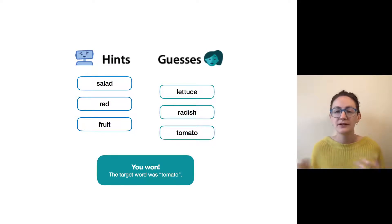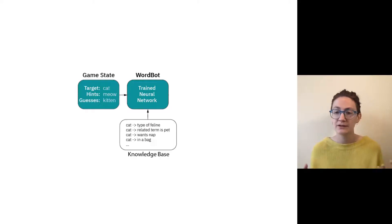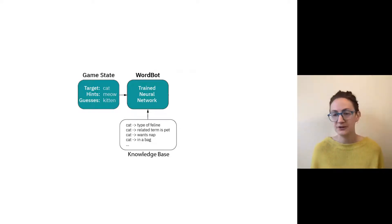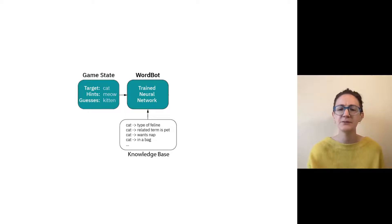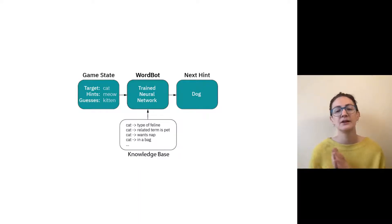I want to show how the AI agent we developed works to play this game. Essentially, our AI agent is a trained neural network — we call it WordBot. It has two main inputs: the game state, which includes the hidden word, previous guesses, and any previous hints for this particular game; and information from a knowledge base. We use ConceptNet, which is a large knowledge base of common sense information. Based on these inputs, the AI agent outputs what it thinks the next hint should be. It's trained in a reinforcement learning context — technically, one agent plays as the hint giver and one as the guesser, but we'll focus on the hint giver.